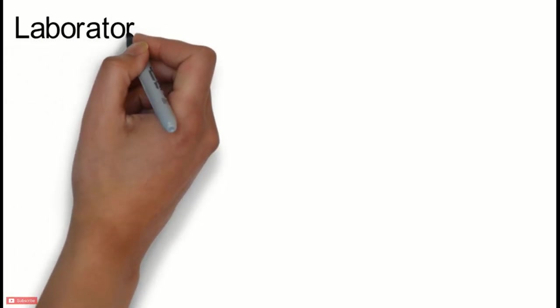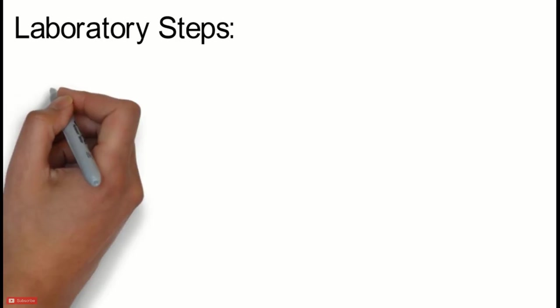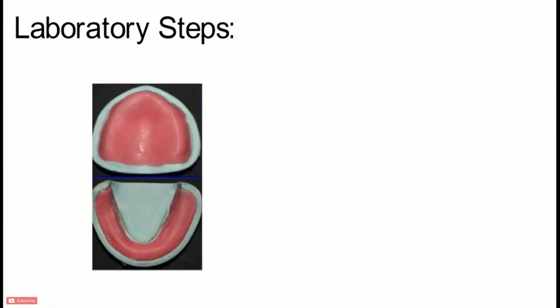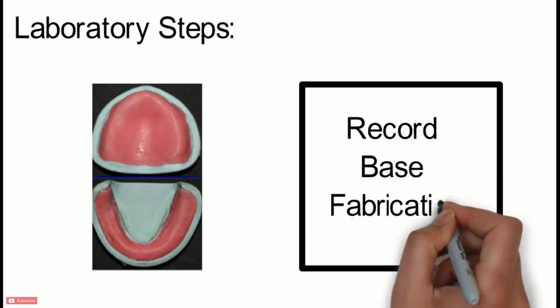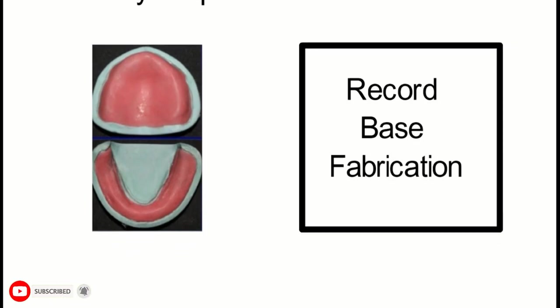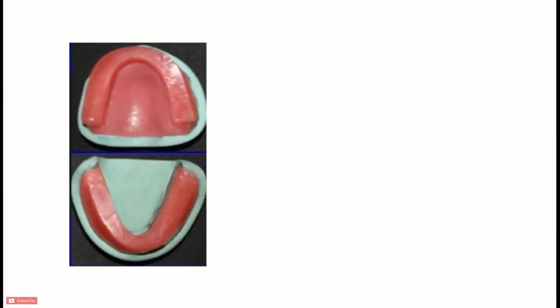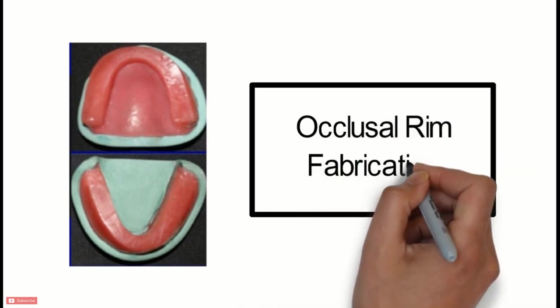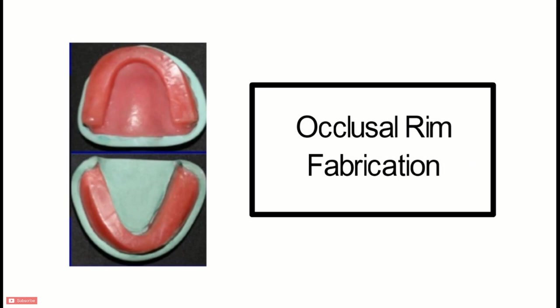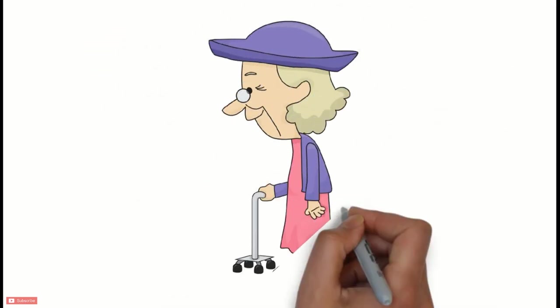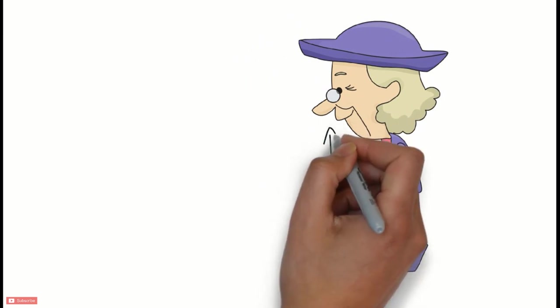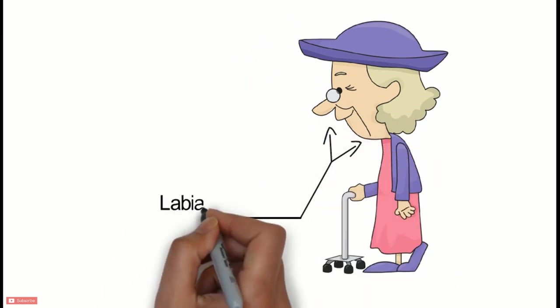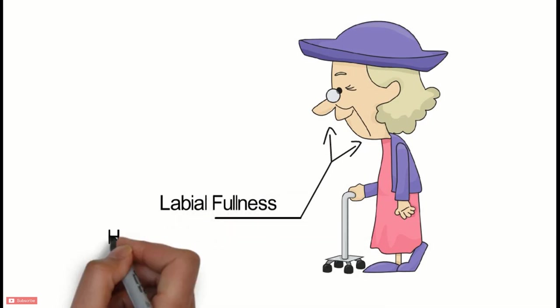Now let's discuss the laboratory procedures to be performed after the master cast is poured. The first step is the fabrication of record base using auto-polymerizing resin. After the record bases are fabricated, occlusal rims are made on the record bases. The record bases with occlusal rims are then tried intraorally. It is important to adjust the rim correctly according to the desired labial fullness and visibility, so the labial fullness and height of the rim should be adjusted. The lip is normally supported by the alveolar process and teeth, which at this stage are represented by the base and rim of the record block.